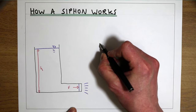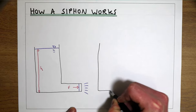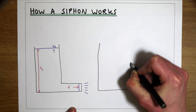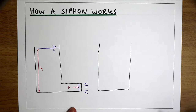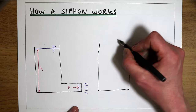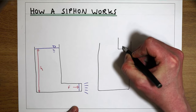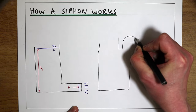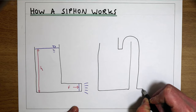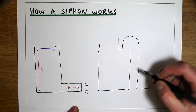But what we can now think about is what happens if we have a system with a siphon — so the same tank of water, but instead of the pipe coming out the bottom, the pipe now loops over the top of the tank and comes down to the bottom this way.